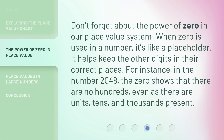Don't forget about the power of zero in our place value system. When zero is used in a number, it's like a placeholder — it helps keep the other digits in their correct places. For instance, in the number 2048, the zero shows that there are no hundreds, even as there are units, tens, and thousands present.